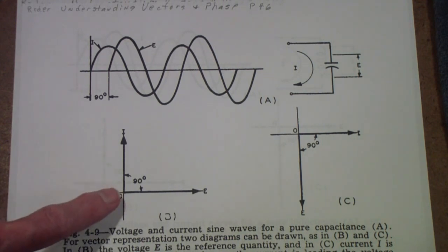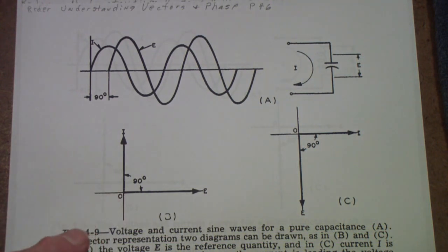If you draw a vector diagram, and, by the way, these pictures are from a Rider book called Understanding Vectors and Phase that you can download from the worldradiohistory.com website. And it's one of the books that I, frankly, studied when I was back in high school. It's a very good book. It starts with basics. You don't need to know very much. Boy, I didn't know very much then. So, if you'd like more on these sorts of things, download that book and take a look at it.